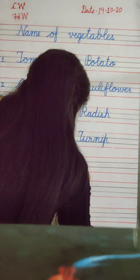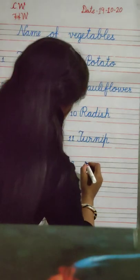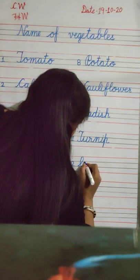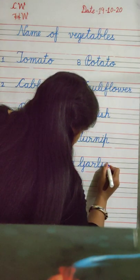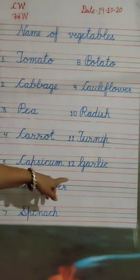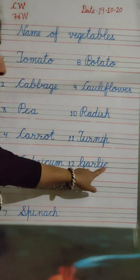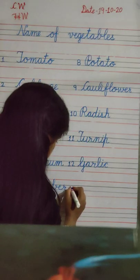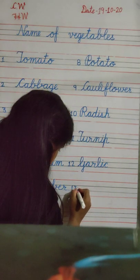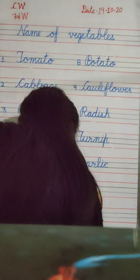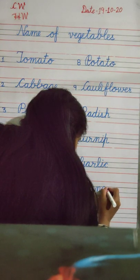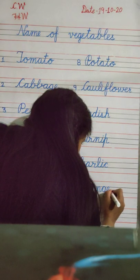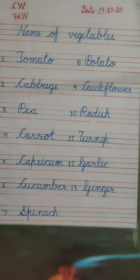Number 12. G, A, R, L, I, C. Garlic. G, A, R, L, I, C. Garlic. Next, number 13. G, I, N, G, E, R. Ginger.